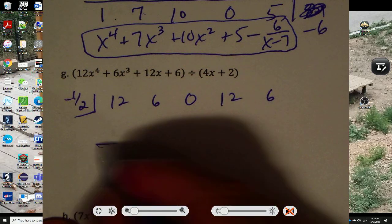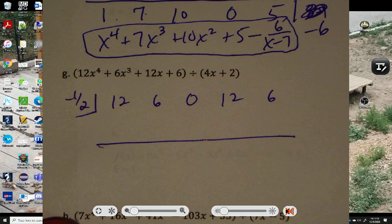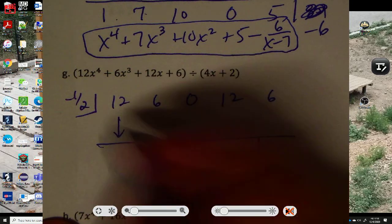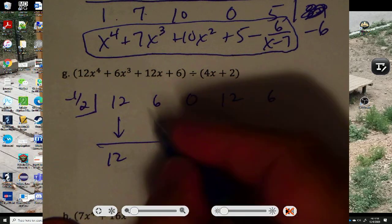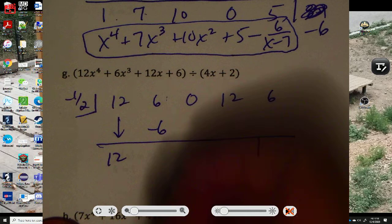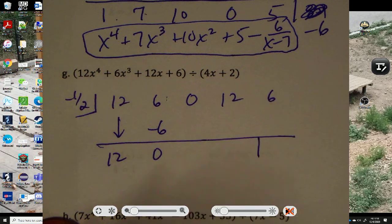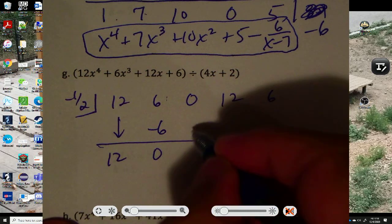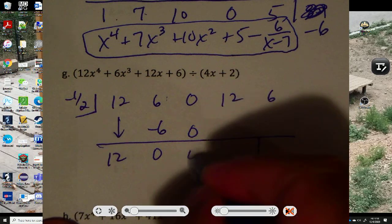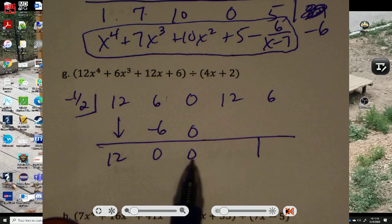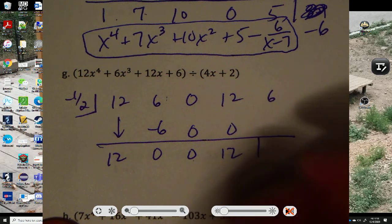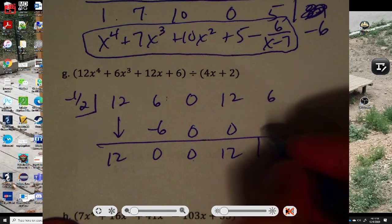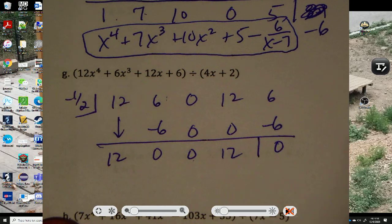Bring down the first term. So that's 12. Negative 1 half of 12 is negative 6. 6 and negative 6 is 0. Negative 1 half times 0 is 0. Negative 1 half times 0 is 0. 12 plus 0 is 12. Negative 1 half times 12 is negative 6. Add and you get 0 again.